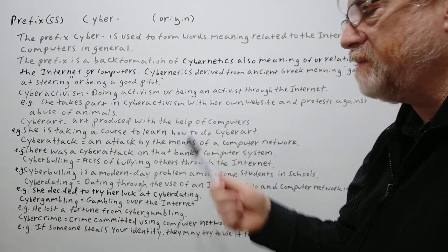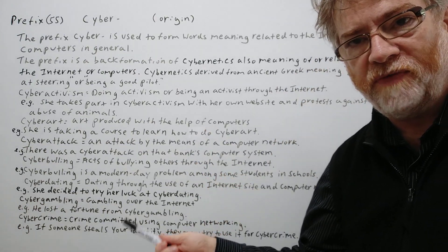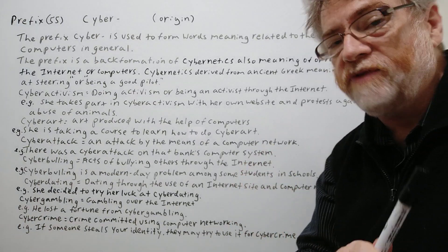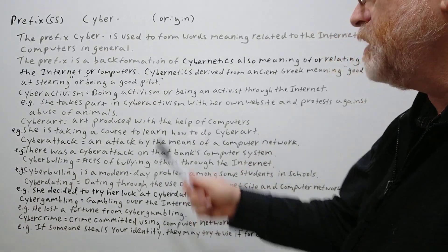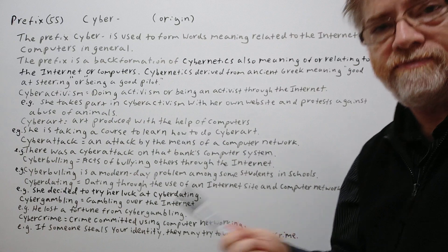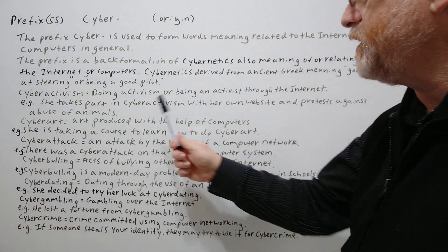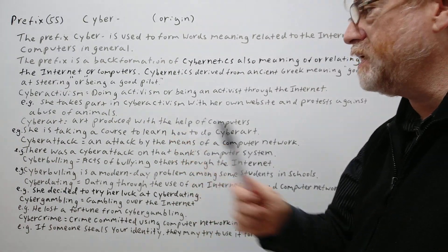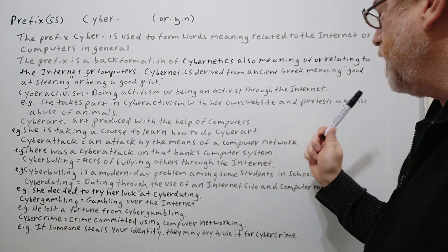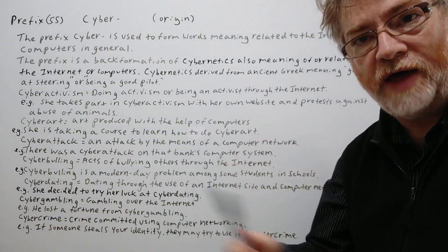We've got several examples here to show just how this prefix is used. The first one: cyber activism — doing activism or being an activist through the internet. Example: She takes part in cyber activism with her own website and protests against abuse of animals.